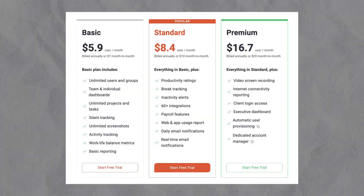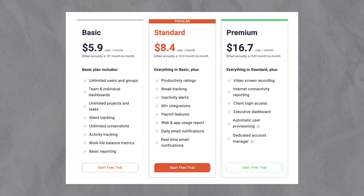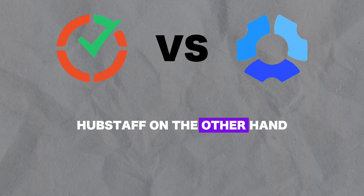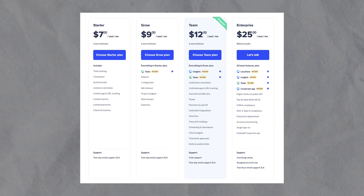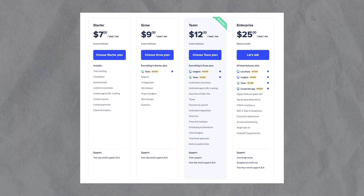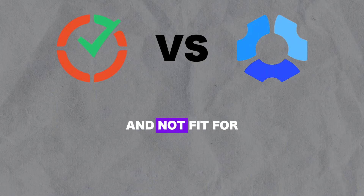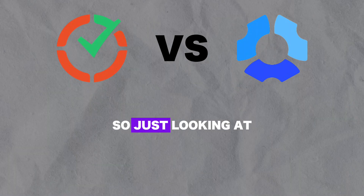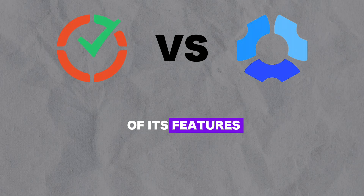When billed monthly, Time Doctor offers three plans ranging from $7 per user per month to $20 per user per month. Hubstaff, on the other hand, offers a very basic free plan and four paid packages ranging from $7 to $25 per user per month. But the free plan is very basic and not fit for most business owners. So just looking at the pricing, Time Doctor is a little bit cheaper for all of its features.